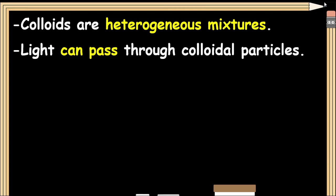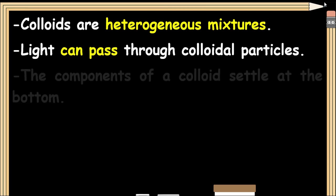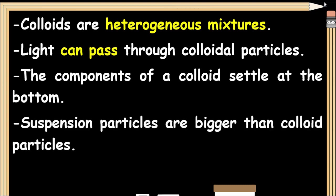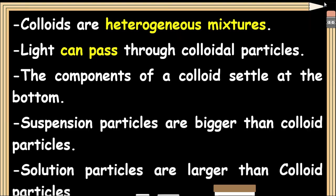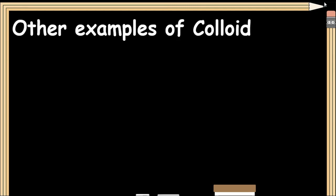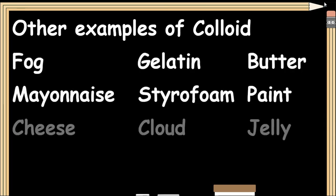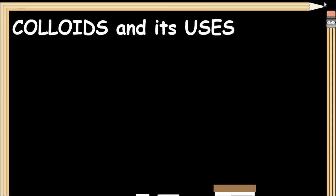Summary: Colloids are heterogeneous mixtures. Light can pass through and be scattered by colloidal particles. The components of a colloid do not settle at the bottom. Suspension particles are bigger than colloid particles, and solution particles are smaller than colloid particles. Other examples of colloids include fog, gelatin, butter, mayonnaise, styrofoam, paint, cheese, cloud, and jelly.